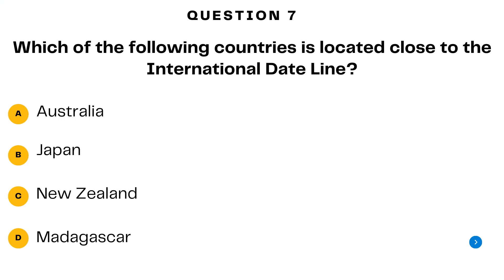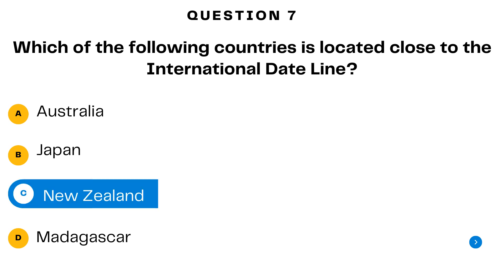Question number seven. Which of the following countries is located close to the international dateline? A. Australia. B. Japan. C. New Zealand. Or D. Madagascar. The answer is C — New Zealand. Although New Zealand is not particularly close to the 180 degree meridian, from all these options, New Zealand is the closest to the international dateline.